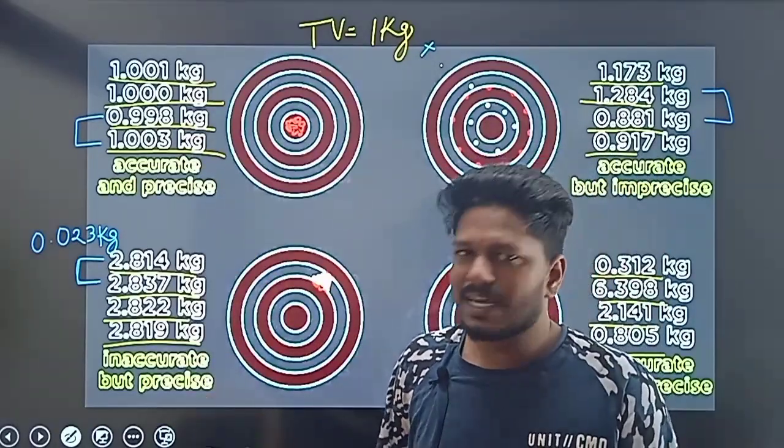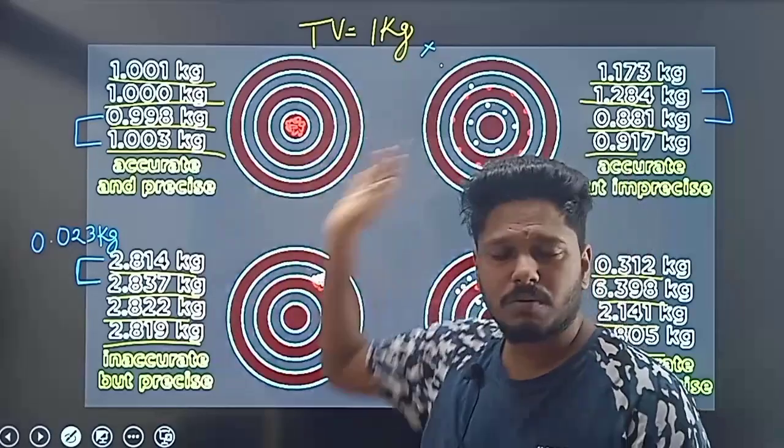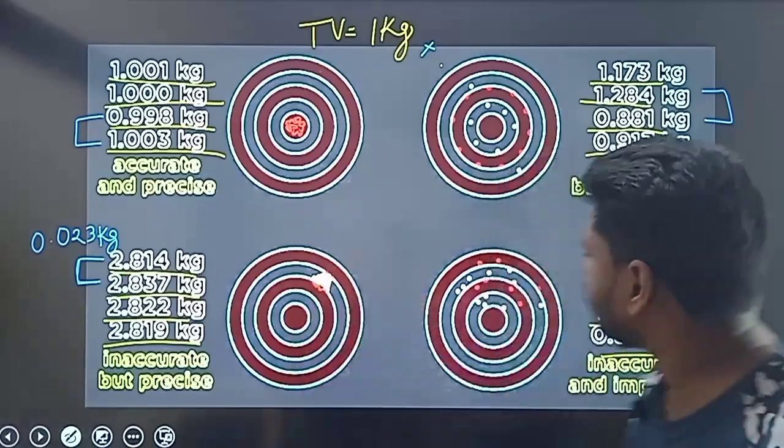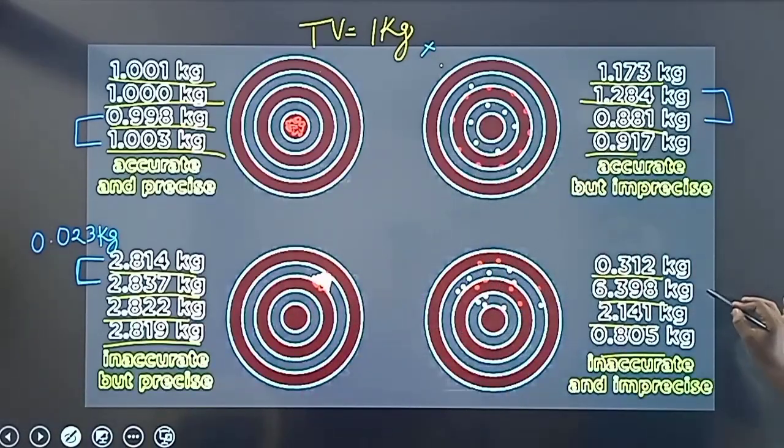It's accurate. Accurate value and true value. The true value is close to it, so it is accurate. And the values have small variation, so it is precise.